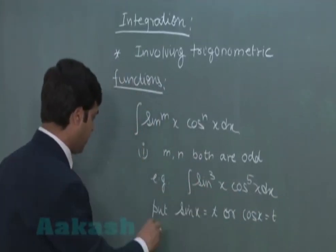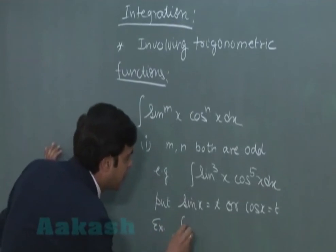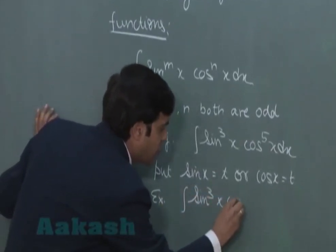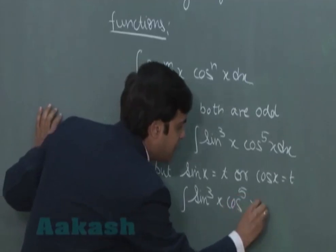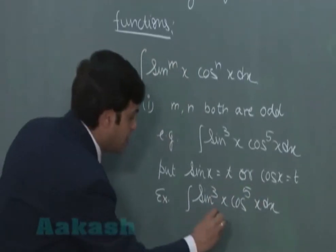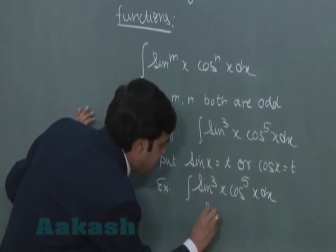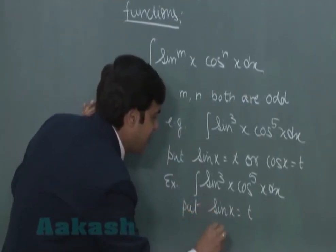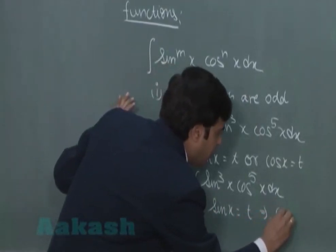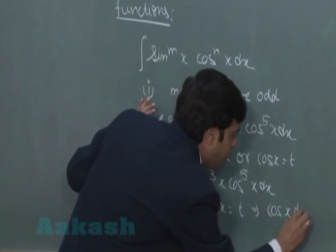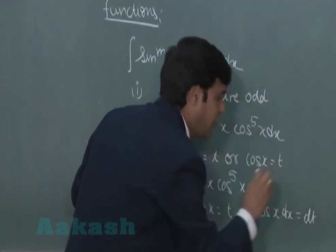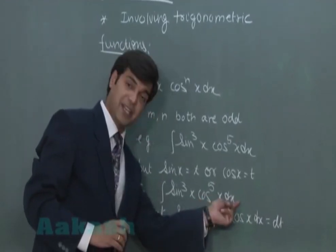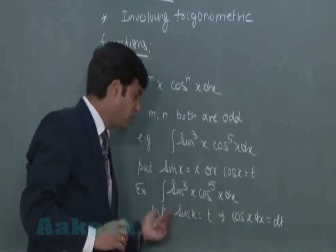Let us consider the same example. Integral sin³(x) cos⁵(x) dx. If I substitute sin(x) as t, we get cos(x) dx is equal to dt. When you substitute sin(x) as t, a cos(x) you can include with dx.